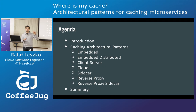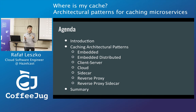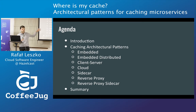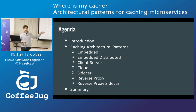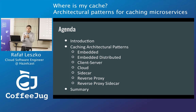Our agenda for today is very simple. There will be a very short introduction about caching in general, and then I will walk through all possible caching patterns — caching topologies that you can use inside your microservice system. While I'm talking, I would like you to think about two things: first, which one do you use in your system? And second, does it make sense to change to any other from this in my system?